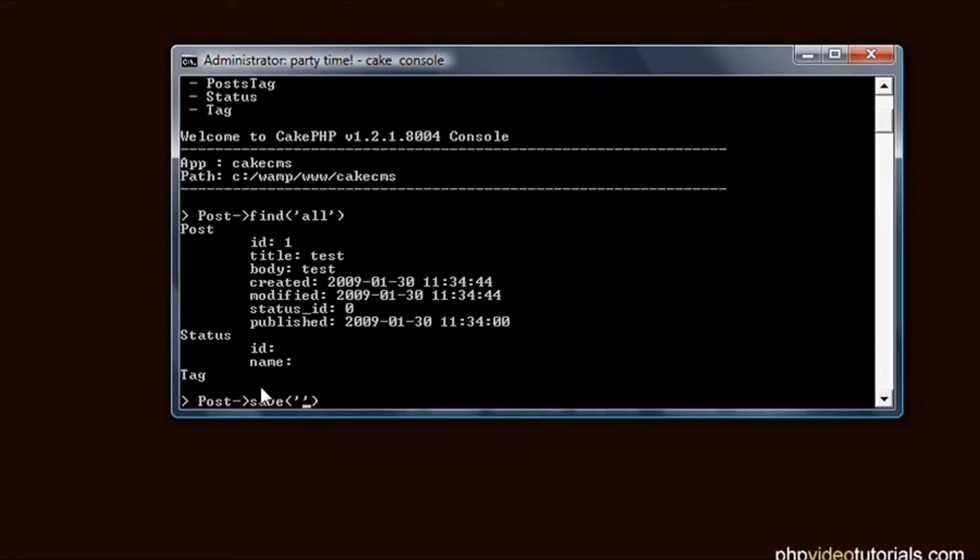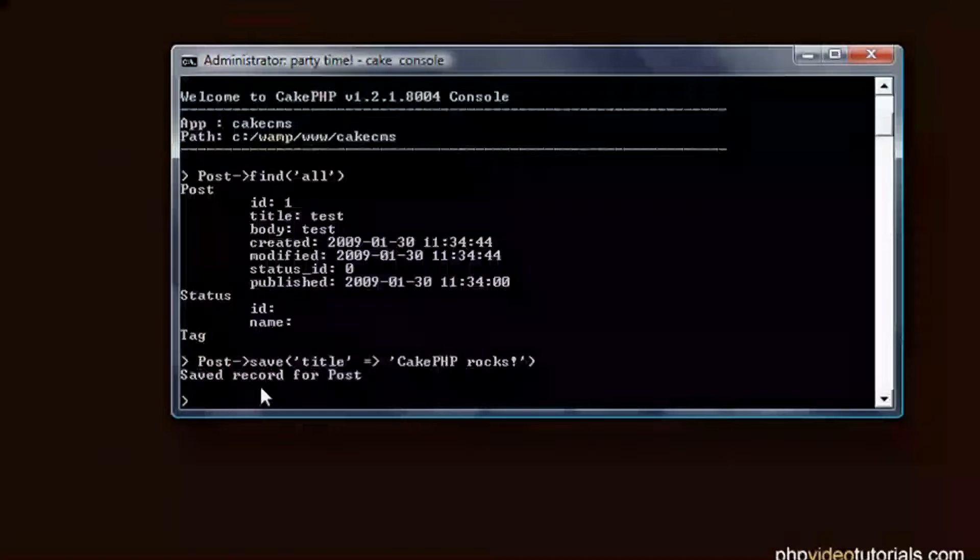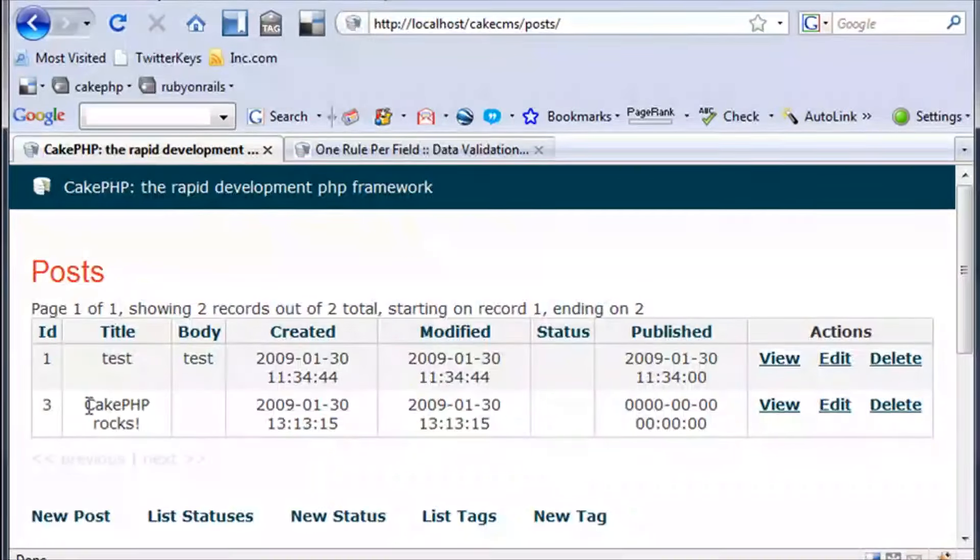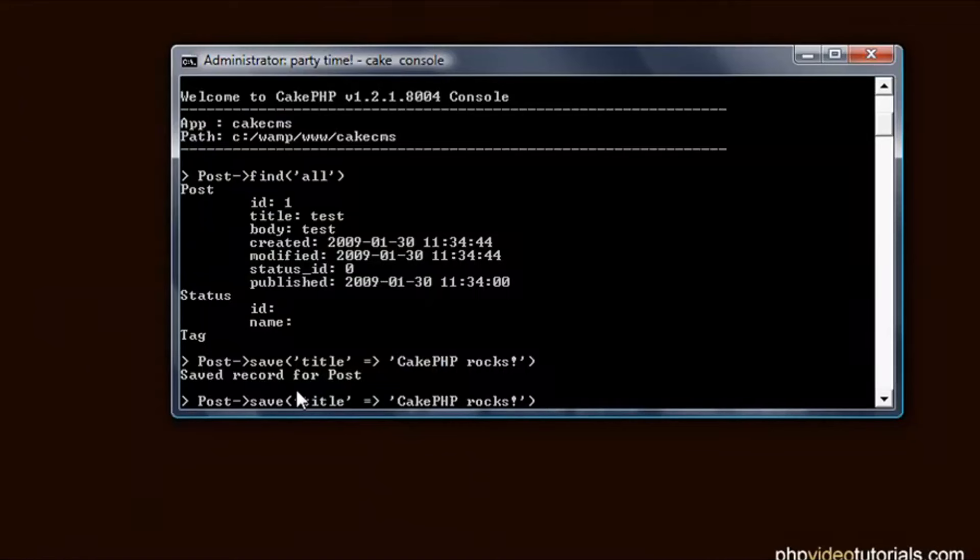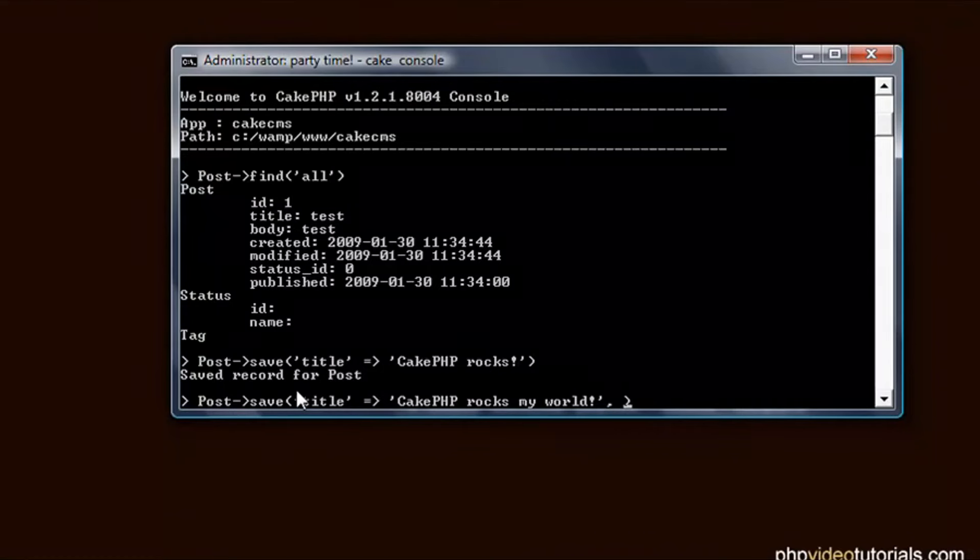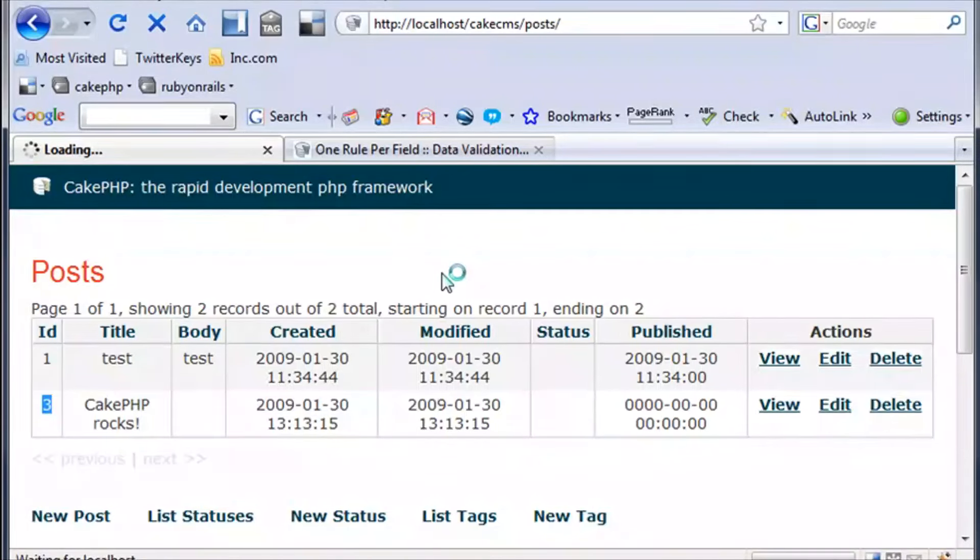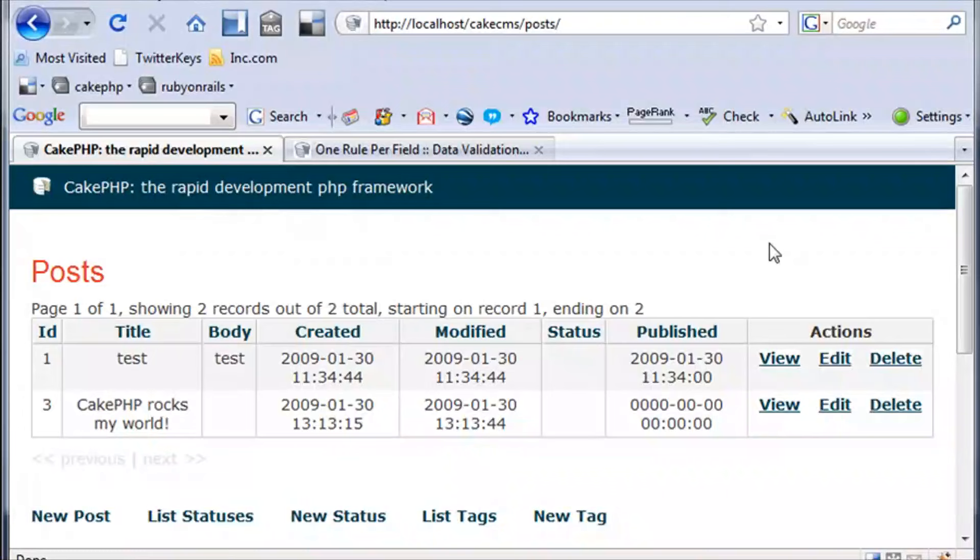So we'll do a post and we'll do a save here. And we're just going to throw in a title. And we'll just say the title equals cakephp.rocks and we'll just hit enter and you'll see that record saved. So if we go back to our application and we go back to our posts, you can see that the cake rocks and the ID number for that is number three. So we can do an update on that if we want to. I'll say my world, it sounds a bit dirty, but it's pretty cool. And if we throw in the ID of that, so the ID was three, we hit enter, save the record. We come back here, we do a refresh and you can see that that's been updated.